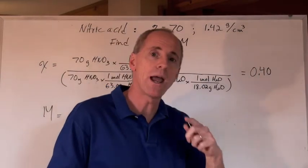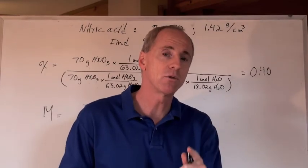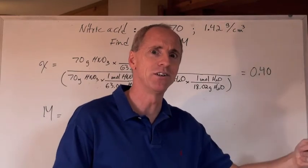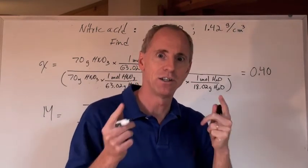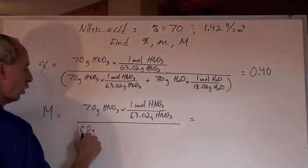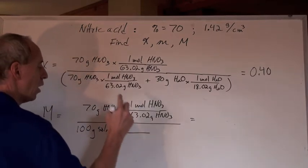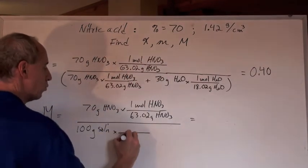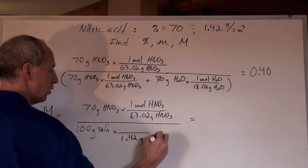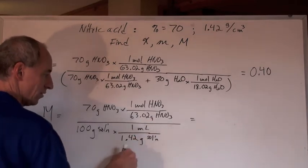But you're given a density in grams per milliliter. If you've got grams and grams per milliliter, you can calculate milliliters, and milliliters leads you to liters. You take the 100 grams of solution and use the density, 1.42 grams of solution for every one milliliter of solution.